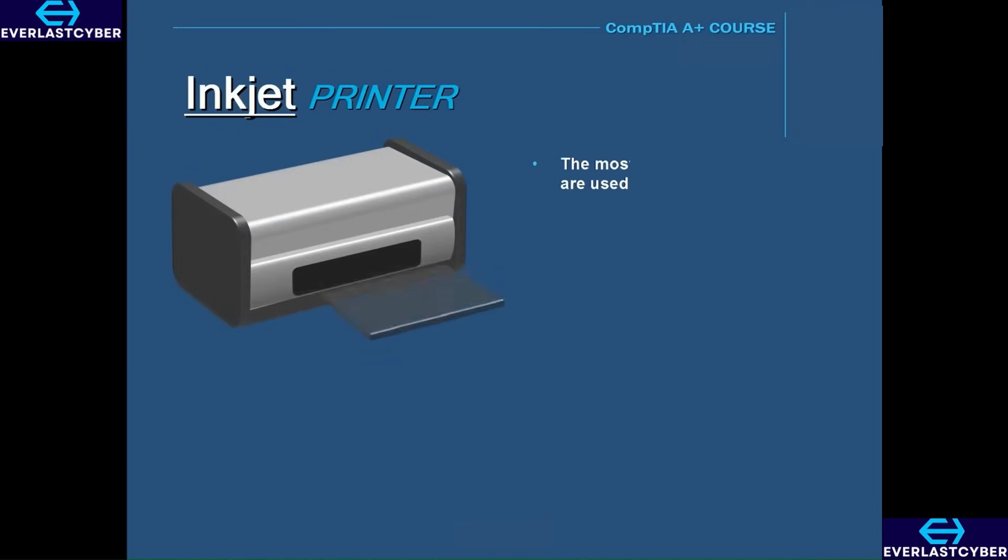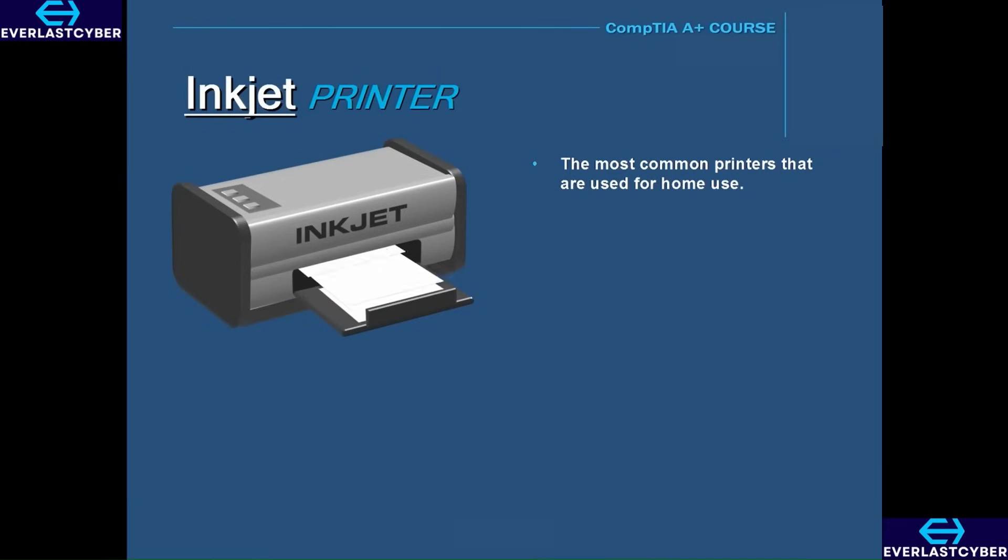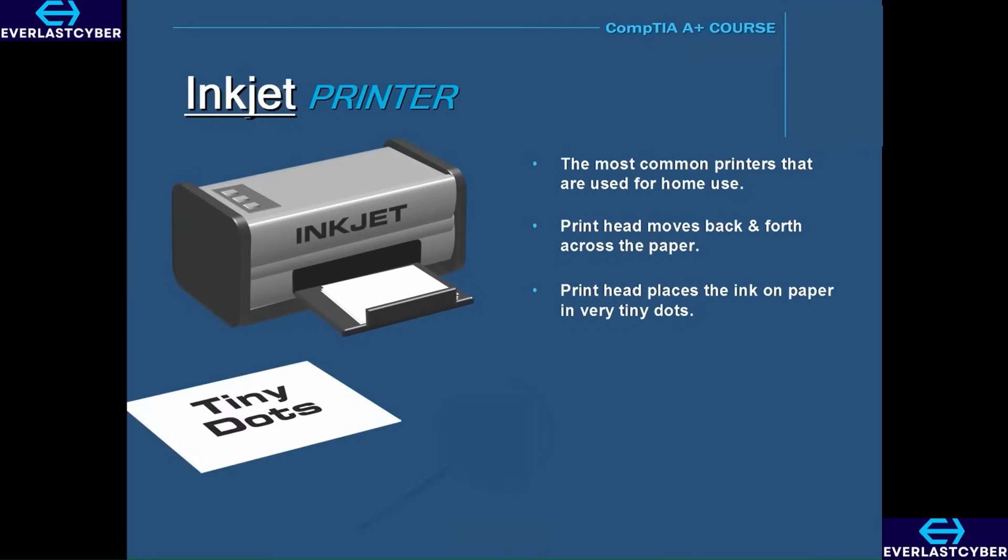Inkjet printers are the most common printers that are used for home use. An inkjet printer works by the printhead moving back and forth across the paper during printing. During this process, the printhead places ink on the paper in very tiny dots. In fact, these dots are so tiny that they are smaller in diameter than a human hair. And as these dots are precisely placed, they form to create an image on paper.